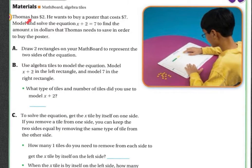Thomas has $2. He wants to buy a poster that costs $7. Model and solve the equation X plus 2 equals 7 to find the amount X in dollars that Thomas will need to save in order to buy the poster.